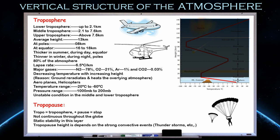Pressure decreases with increasing height because it depends on the concentration of gas molecules in the atmosphere. The atmosphere is a mixture of many gases, and when you have more gas molecules, you have higher pressure. As you go from the ground upward — say to 30 or 110 kilometers — the concentration of molecules decreases, so pressure also decreases. Therefore, pressure decrease is always related to the density of gas molecules.